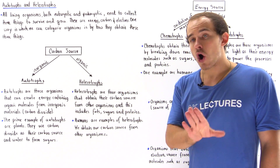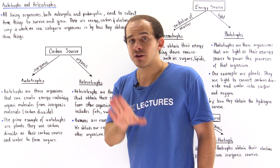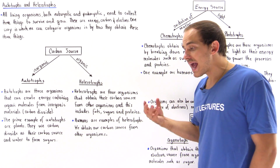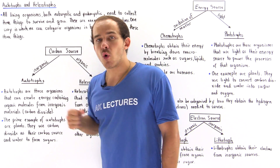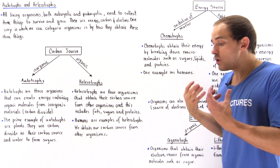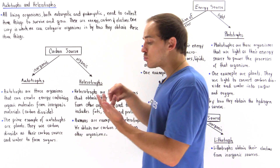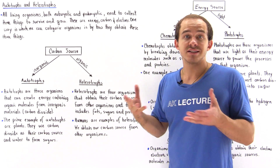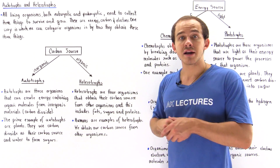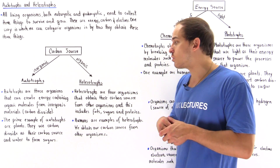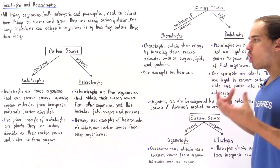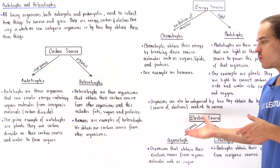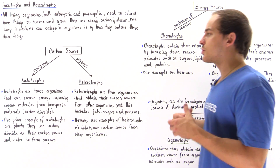Humans are examples of heterotrophs. Heterotrophs are those organisms that must obtain their organic carbon source from an outside organism. For example, we have to obtain our carbohydrates, proteins, and lipids from other types of organisms. That's exactly why we need to eat food products — animal products as well as plant products — to obtain these organic carbon-containing molecules.